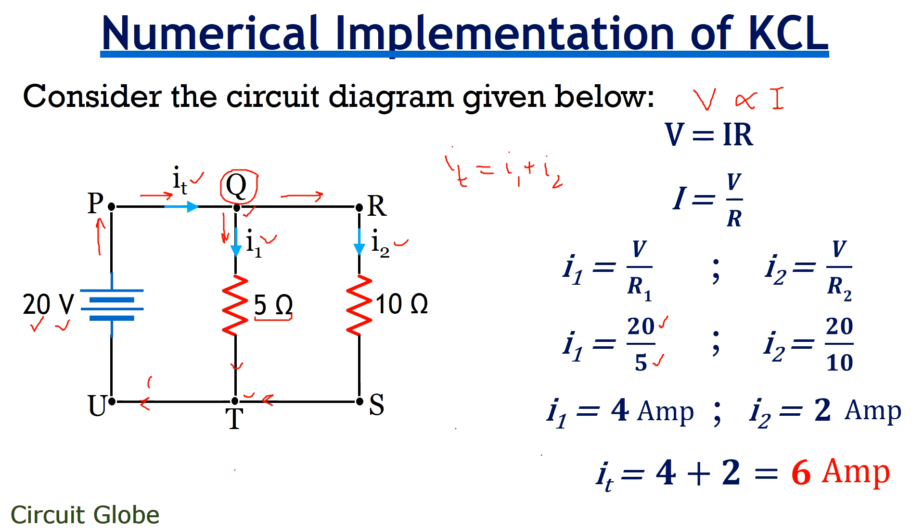Friends, therefore, we can say that 6 ampere is the current which is reaching node U and it is the same current which is flowing in branch UP. And this verifies KCL.